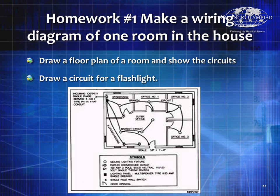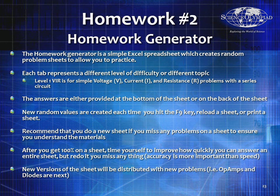For homework number one, make a wiring diagram of one room in your house — pick a room with a switch, outlets, lights, and maybe a fan — and trace how the current flows. Also do the same thing for a flashlight. The other homework is to use the homework generator in the Dropbox, a simple Excel spreadsheet that creates random problem sheets. Do level 1 VIR — simple voltage, current, and resistance problems in a series circuit. Answers are provided at the bottom or back of the sheet. Press F9 to reload and generate a new set of randomly generated values.